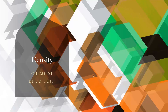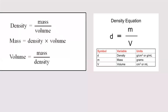Density is the relationship between mass and volume. As you can see, mass is divided by the volume. So the mass will be equal to the multiplication of density times volume. And the volume can be calculated by dividing the mass over the density. Density is given in grams per cubic centimeter for solids and grams per milliliter for liquids. Mass is usually in grams, and volume in cubic centimeters or milliliters.